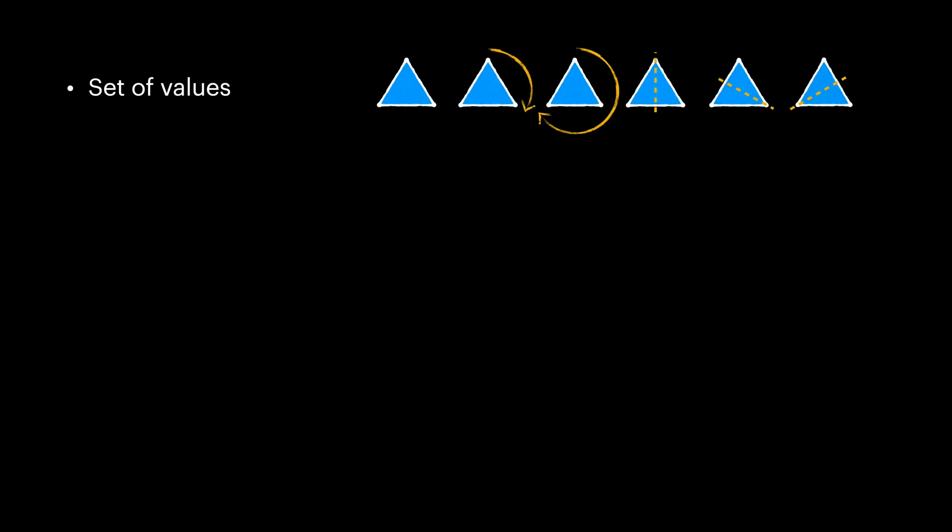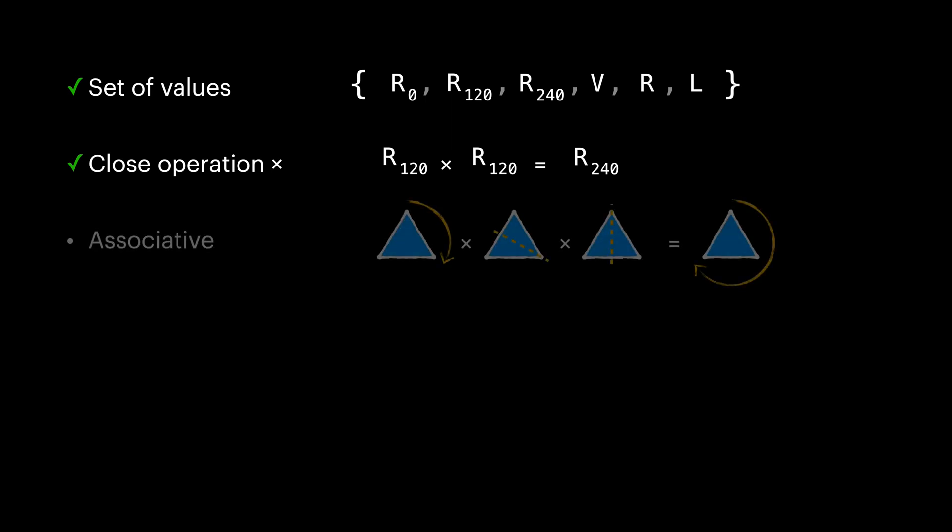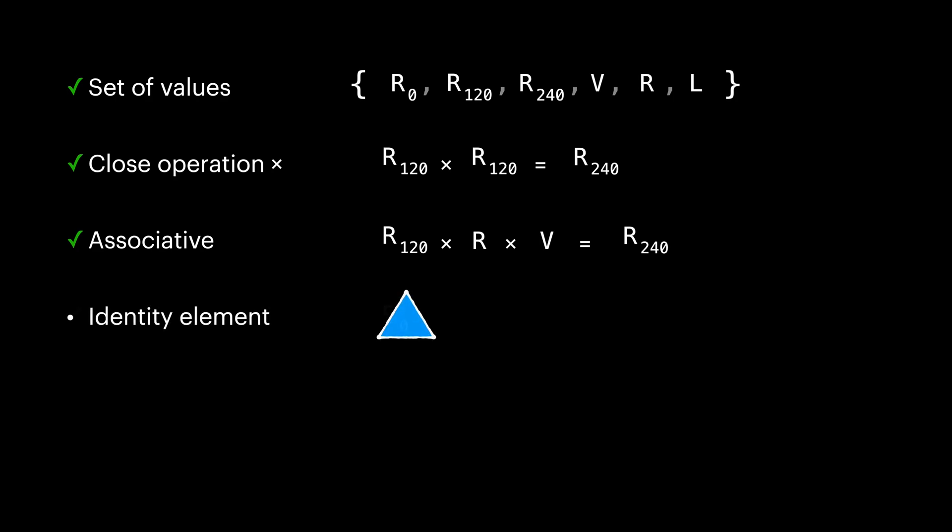Stepping back to our group definition, we have a set of actions. We have a closed binary operation between each two elements in our set. The order of applying our binary operation is not important, meaning our multiplication operation is associative and parentheses are not needed. We have an identity action which acts like a neutral element in our composition definition.